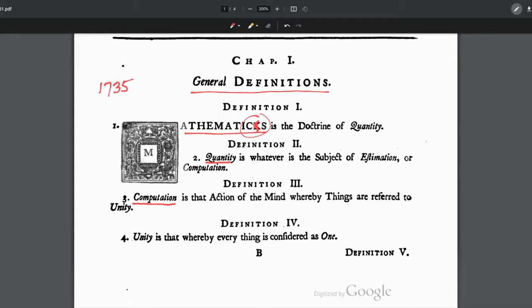But what I want you to notice is there's something going on in your mind when you count things. First, you have to figure out what one of the things is, and then you count or compute how many of those things are in that multitude. Computation is the action of the mind whereby things, a number of things, are referred to unity. And we'll see what unity means in this next definition, definition four.